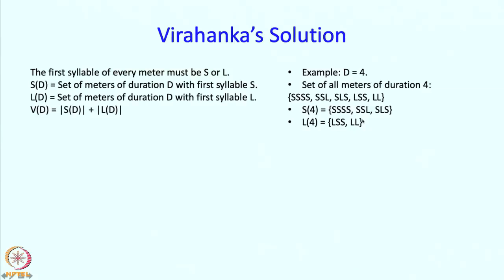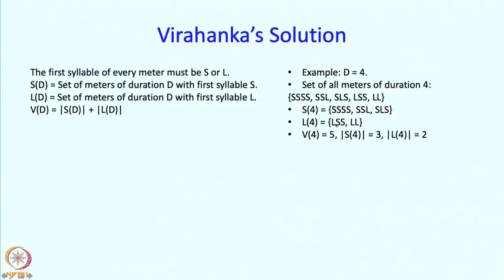Clearly V(d), the total number of meters of duration d, must equal the size of S(d) plus the size of L(d). Checking for d equal to 4: V(4) is 5, where 3 come from the ones with the short syllable first and 2 come from the set with the long syllable first. I am using d equal to 4 just to make sure that our notation is well understood.